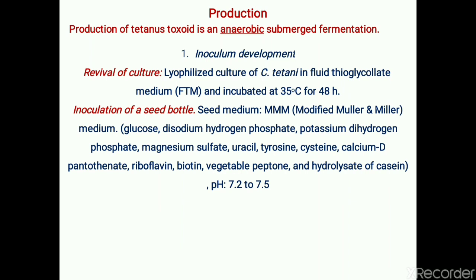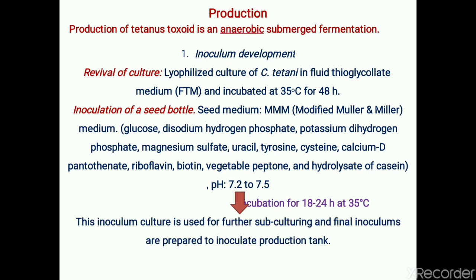Further, the seed bottles are prepared in sterile seed medium called modified Muller and Miller medium, which contains sugars like glucose, amino acids, and several different types of vitamins. The pH of the medium is 7.2 to 7.8. It is incubated for 18 to 24 hours at 35°C. In subsequent stages, subculturing of this organism is done to obtain a final inoculum suitable for inoculation of the production tank.